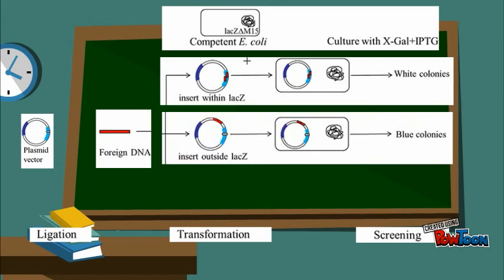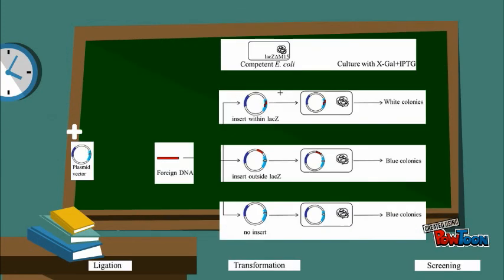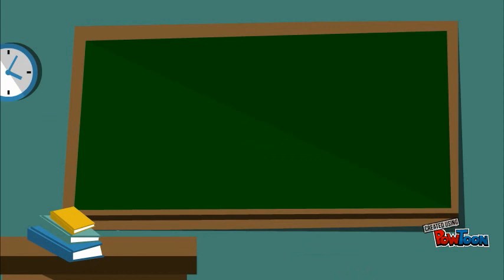When the foreign DNA is inserted outside of the LacZ gene or does not insert into the plasmid vector, there will be blue colonies due to the production of the LacZ gene as an inducer that will catabolize the X-gal inside the media.